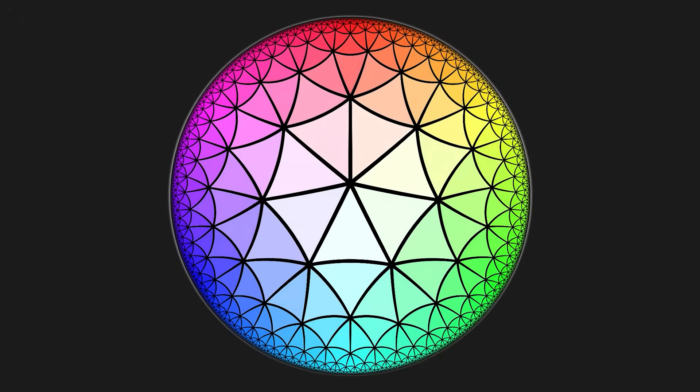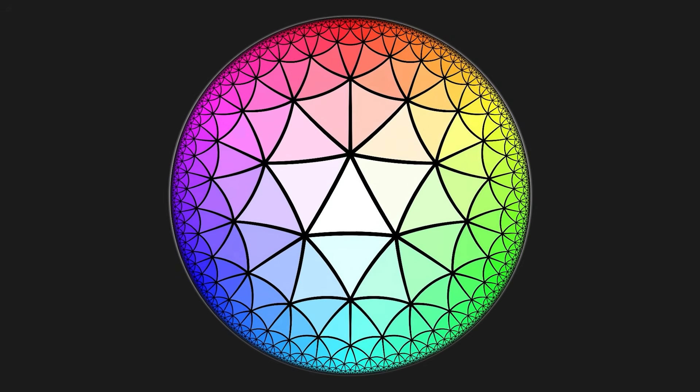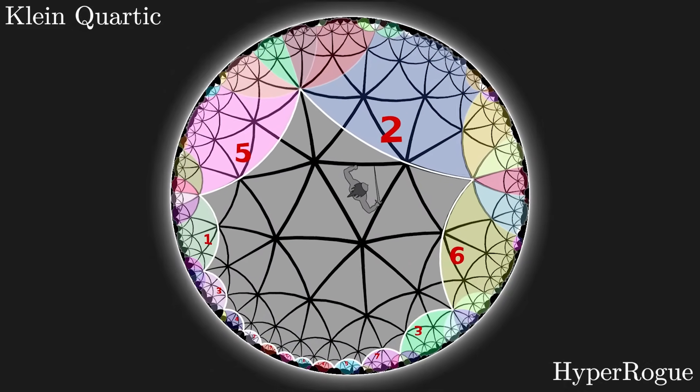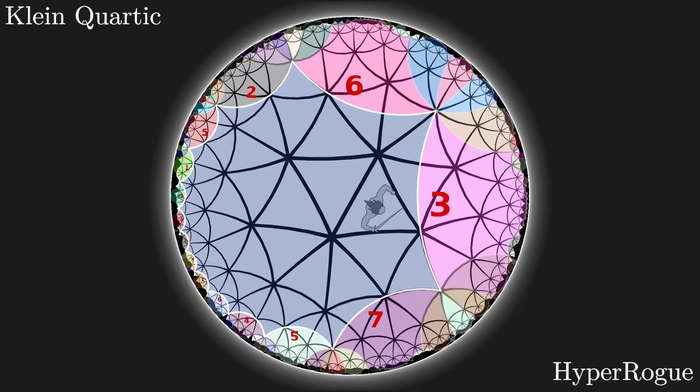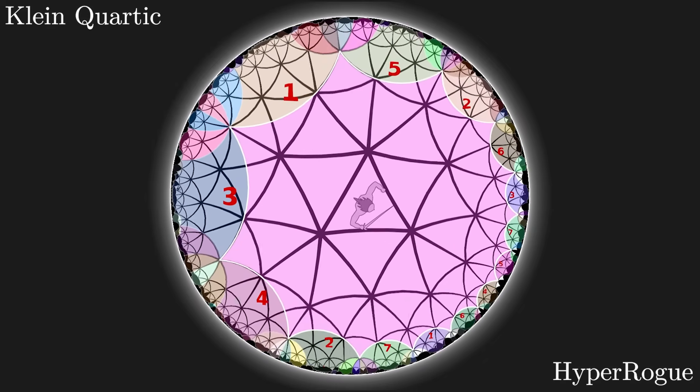And yes, just like planar tilings, hyperbolic tilings can also have repeated patterns, like this Klein Quartic. I can visualize that here in HyperRogue. You'll see that the triangle patterns are repeating as I walk around.